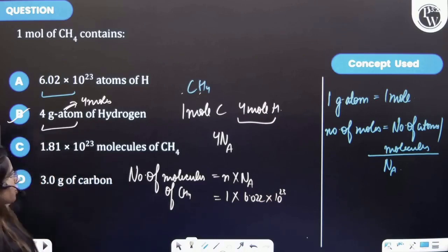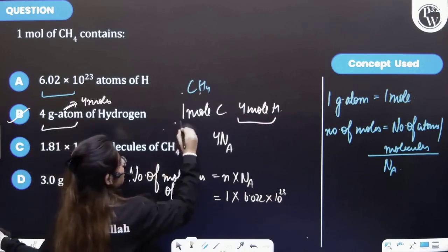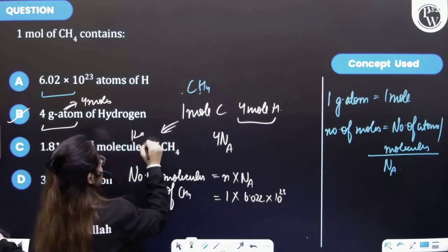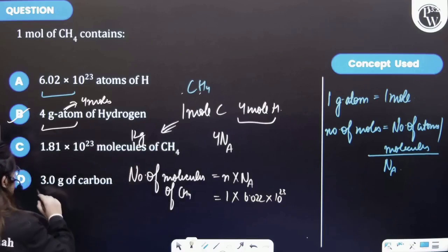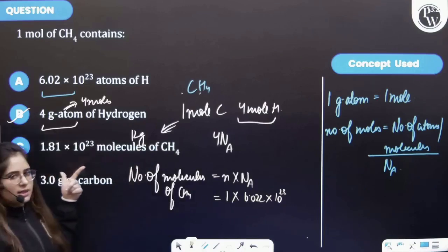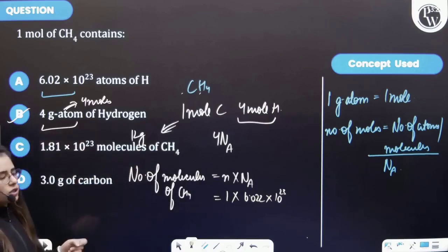Further, three gram of carbon. No, actually we are having one mole carbon which is having twelve gram carbon. So this is also wrong. So the correct answer is B, that means four gram atom of hydrogen in the compound, one mole of CH4.